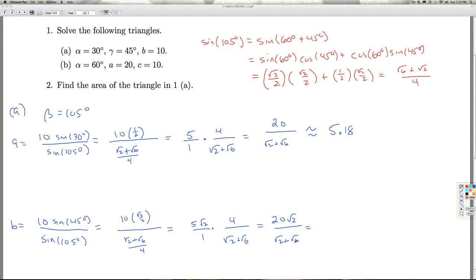Gives me 20 radical 2 over radical 2 plus radical 6. And I can actually factor out a radical 2 from everything. You get 20 over 1 plus radical 3. If you work that out, that ends up being roughly 7.32.